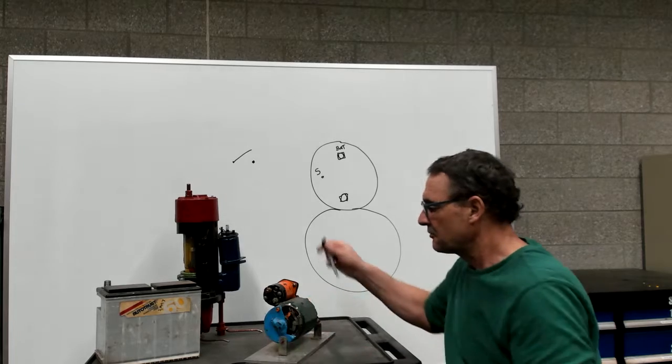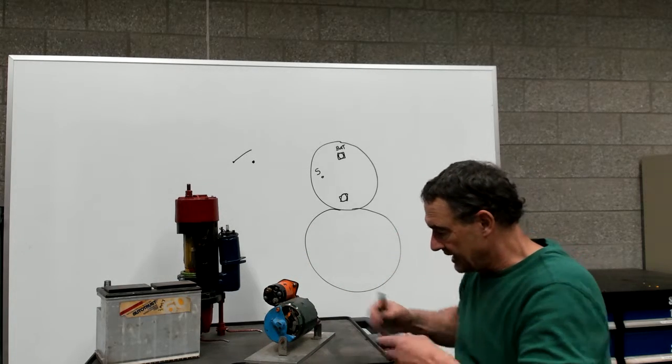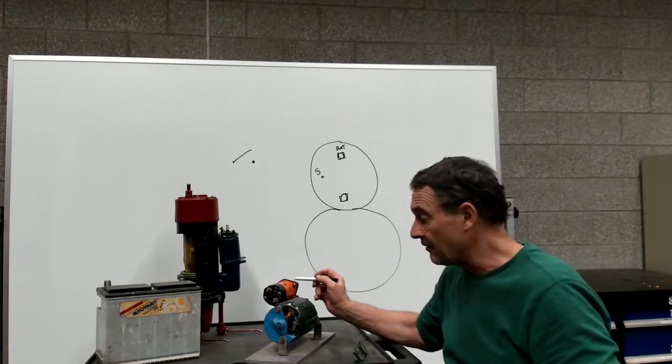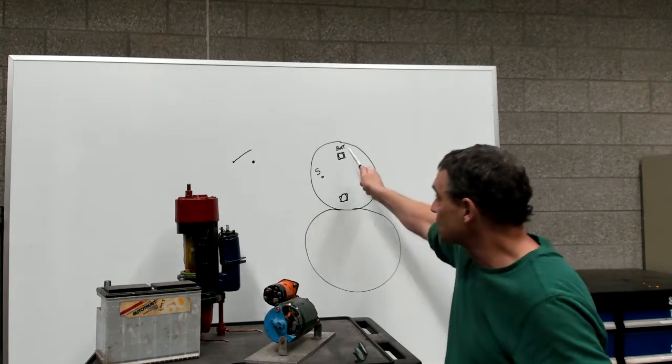Now it does that through a solenoid and the reason we use a solenoid is so that we can control the flow of power. So what we do is we take the positive terminal of the battery and we connect it to the battery terminal.